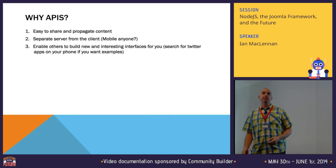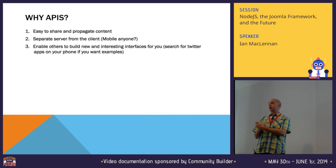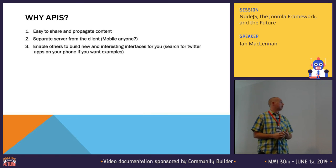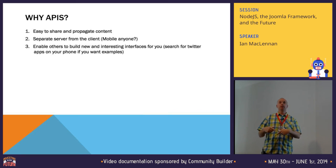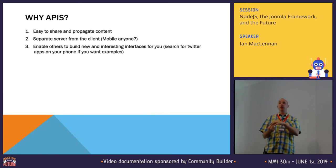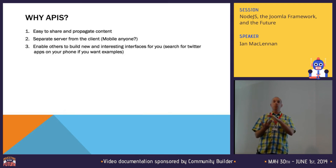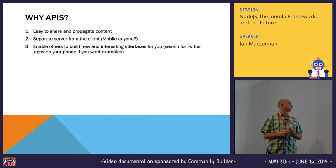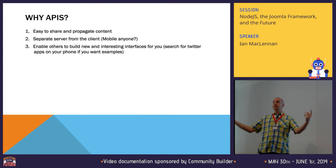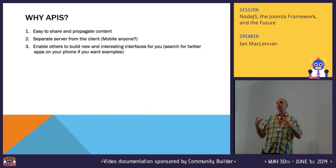So why APIs? First of all, it's easy to share and propagate content. Think about if you were a video production company — you want to automate post-production, do your transcoding, upload it to YouTube, and once the video is uploaded, post a link to your Facebook site and Twitter feed so people can find that video. This is what APIs give us: the ability to take all these disparate systems spread across the internet and weave them together in new and interesting ways.